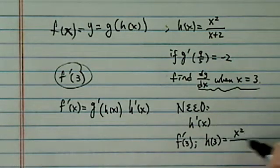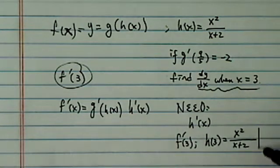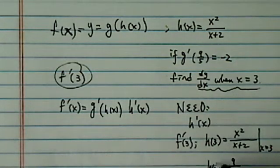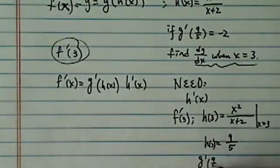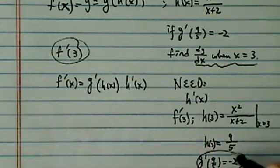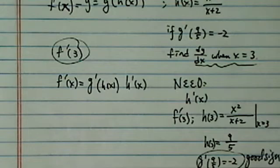Let's take a look: x squared over x plus 2, and then when x equals 3, lo and behold, this is 9/5. h of 3 is 9/5. And since we were given g prime of 9/5 equals minus 2, so this is a good sign in that we are on the right track.